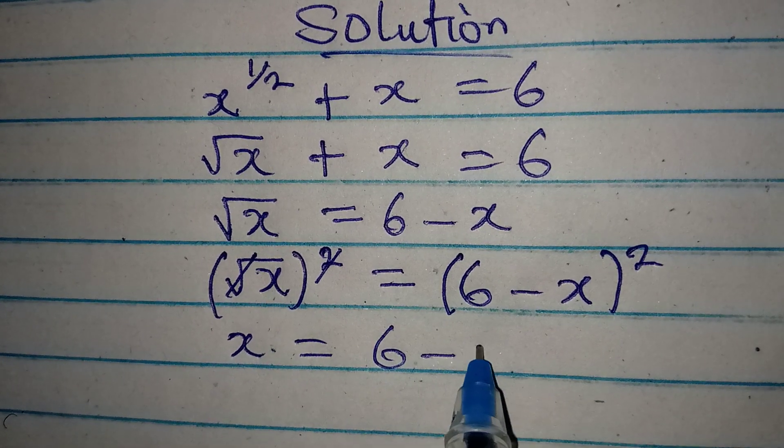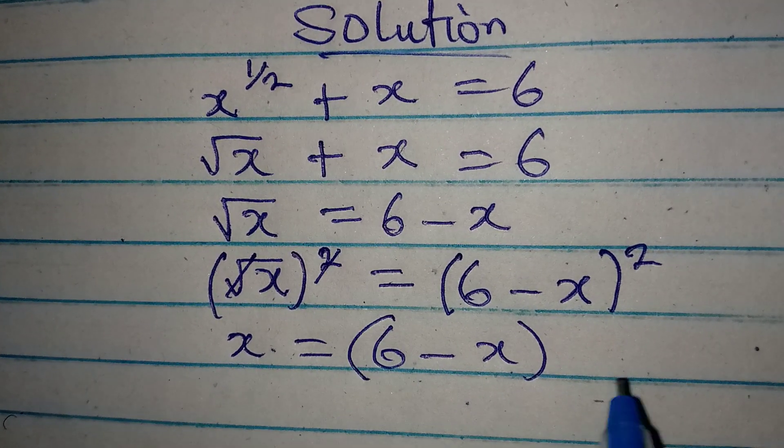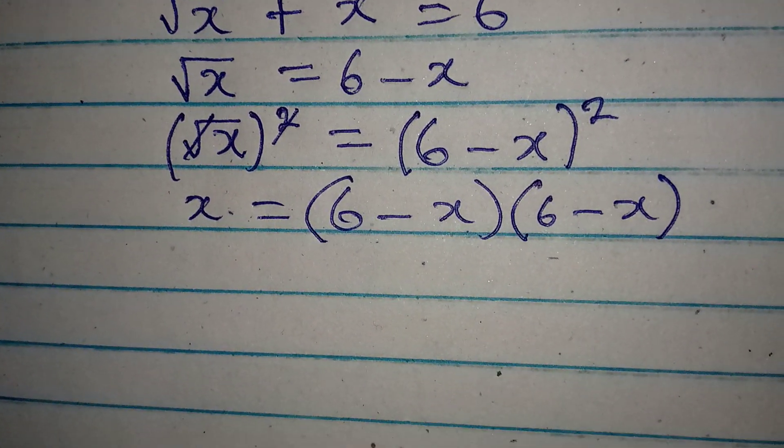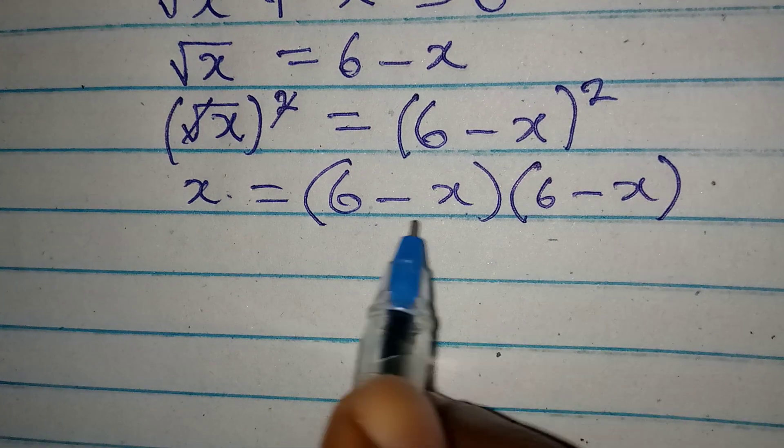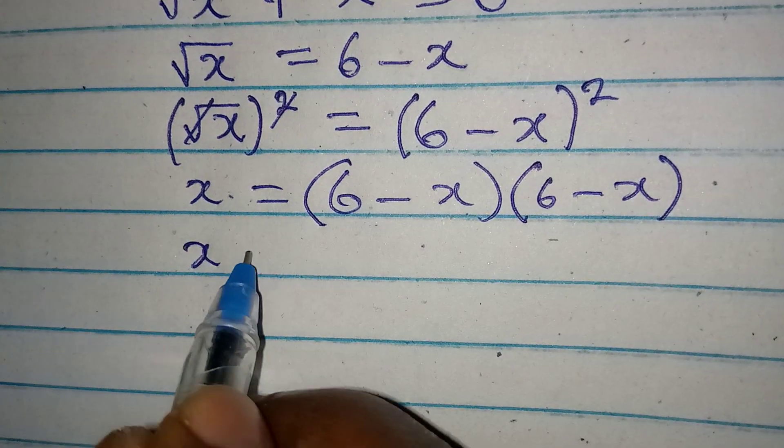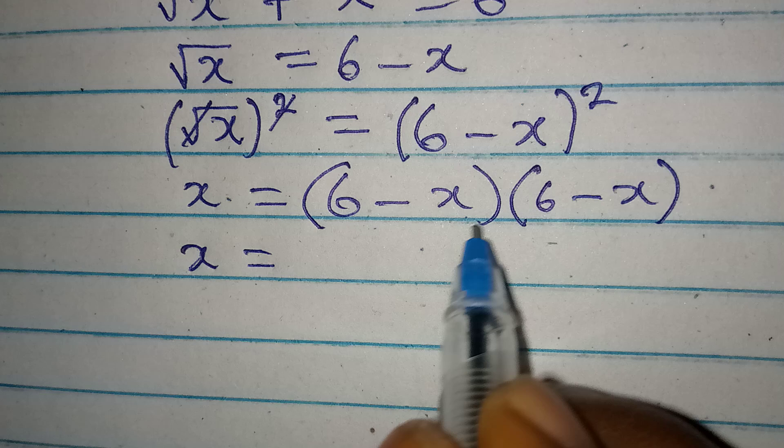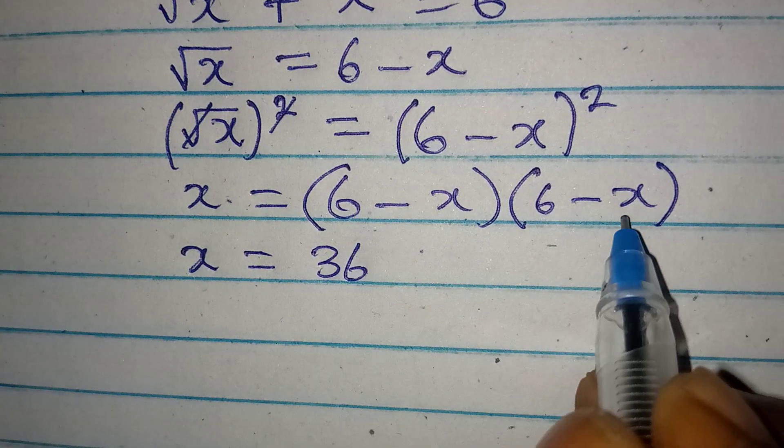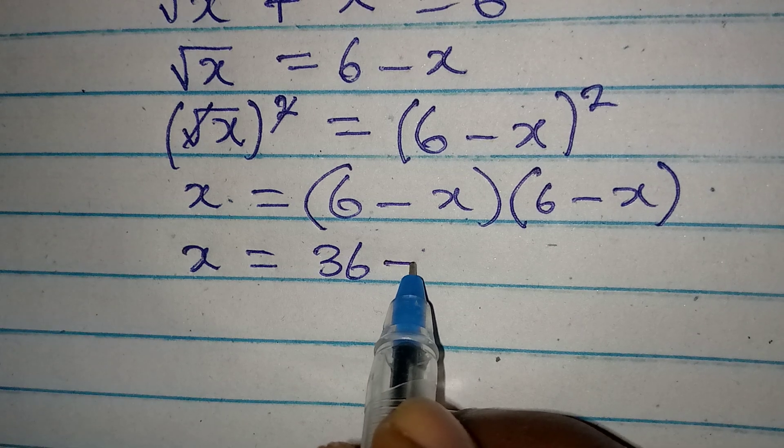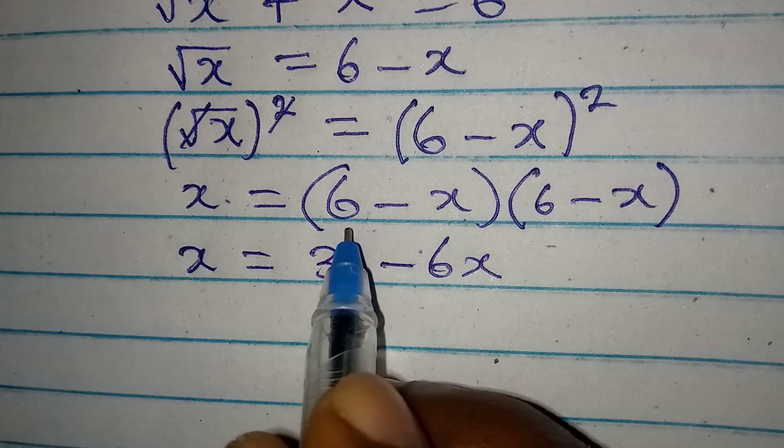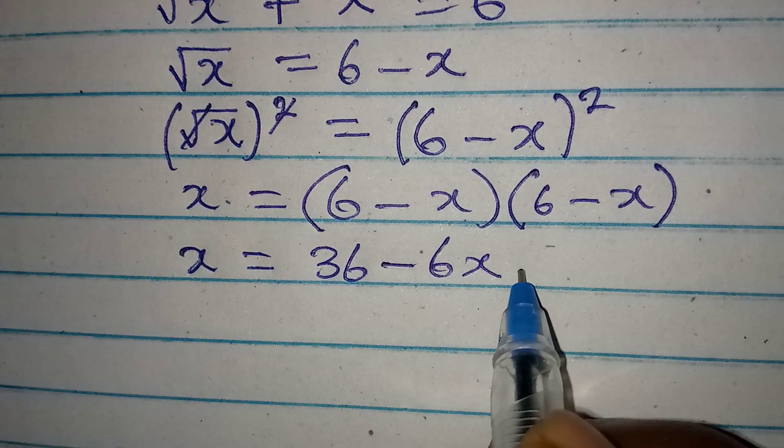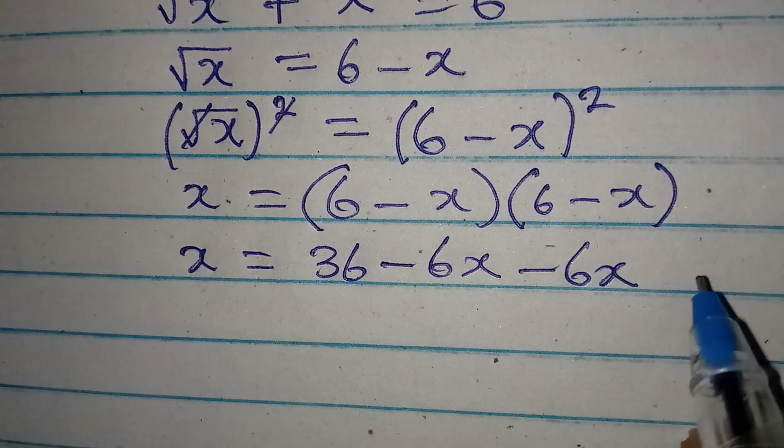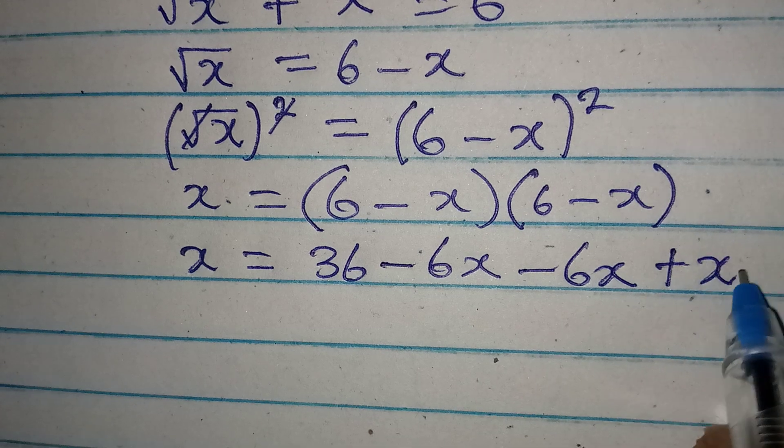So x will be 6 minus x multiply by 6 minus x. I can open the bracket here, so x will equal 6 times 6, that's 36, then 6 times minus x gives minus 6x, then minus x times 6 is minus 6x, and minus x times minus x will give plus x squared.